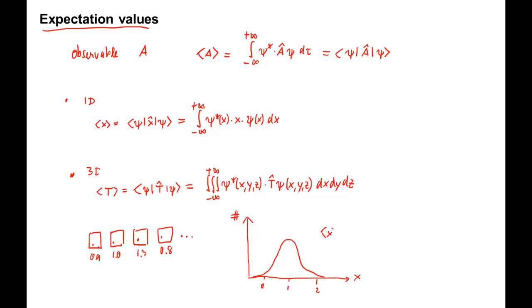Bracket x is the average over this distribution, over all obtained experimental position values. That's what the general expression for the expectation values means.